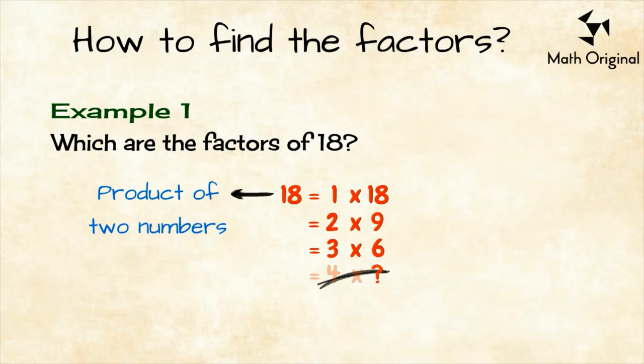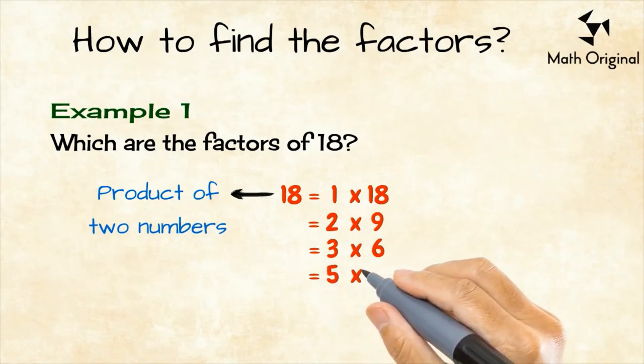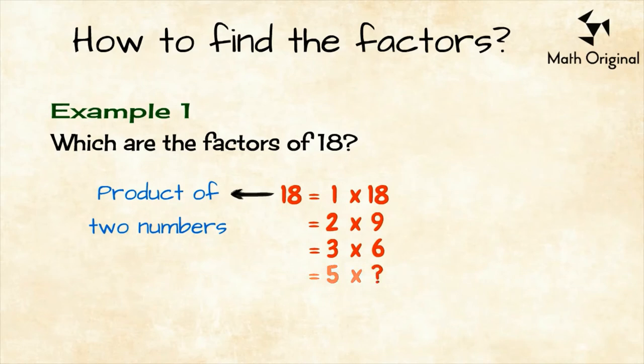No, we can't divide 18 by 4 without having a remainder. What about 5? 18 is not divisible by 5. Then, we don't have to try any other number since the other counting number 6 and higher we have already found it.